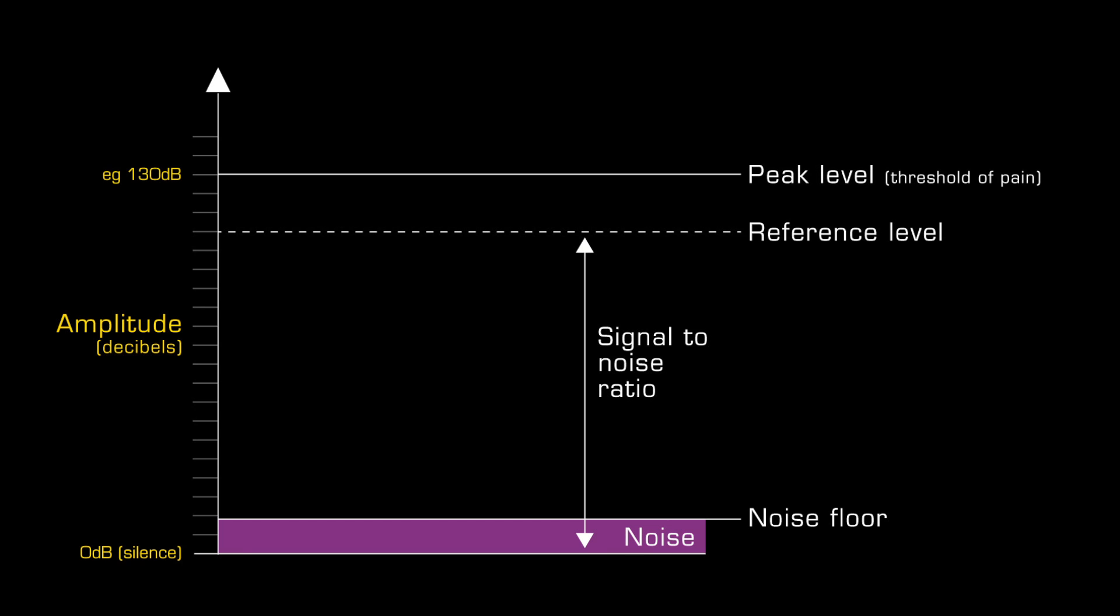Above the reference level, another horizontal line shows either the peak level that can be accommodated or produced. If the diagram is showing human hearing, this will be the threshold of pain.